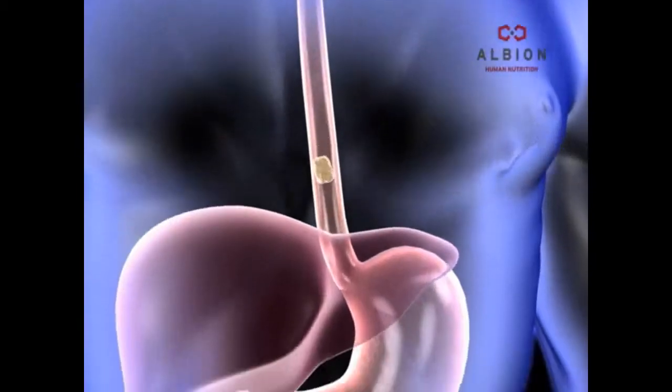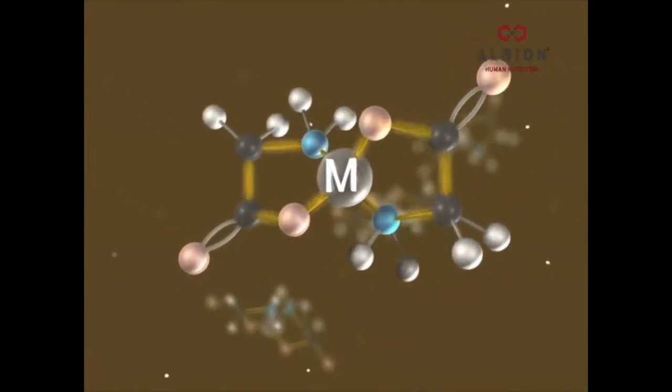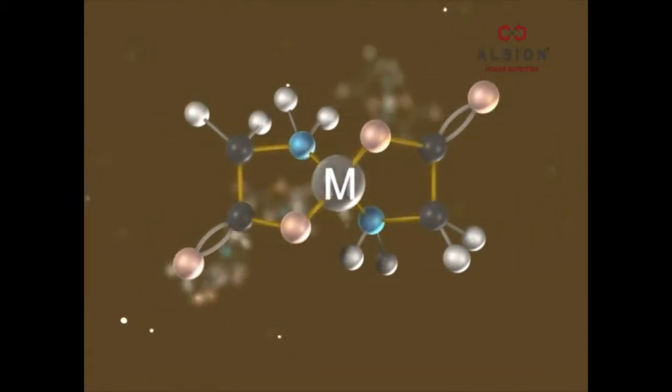The mineral chelate has a special molecular bond between the mineral and amino acid ligand. Each ligand bonds to the mineral in two places, guaranteeing its stability during the digestive process.